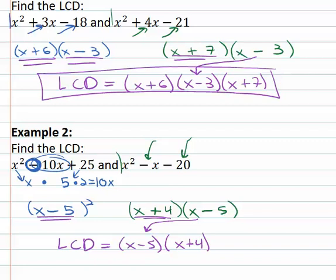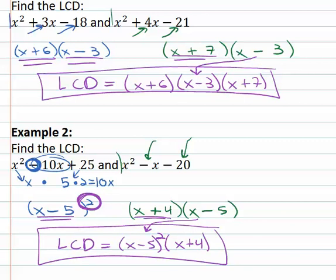But we do want to look to see if we have any exponents. Remember, we have to assign the highest exponent. And on x minus 5, there's an exponent of 2, which means our highest exponent on x minus 5 must be squared. The least common denominator is x minus 5 squared times x plus 4, using all unique factors with highest exponents.